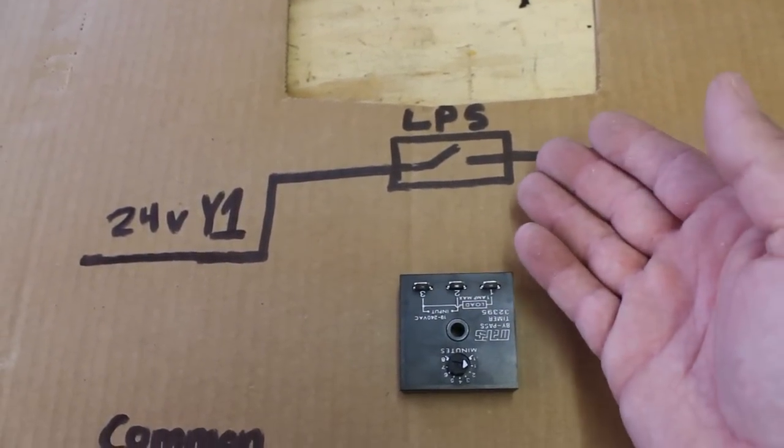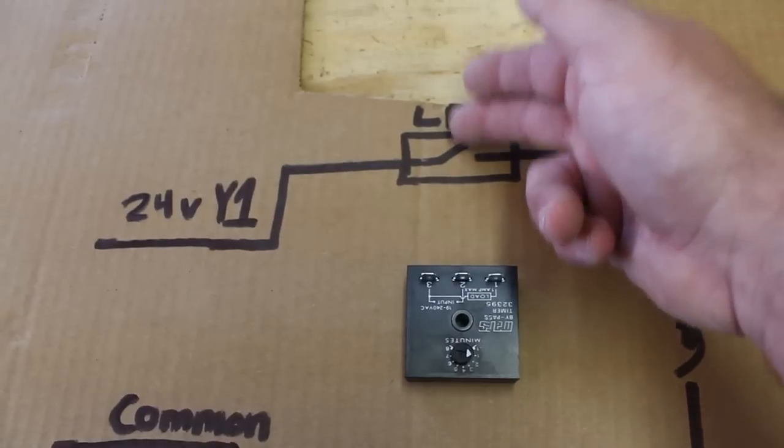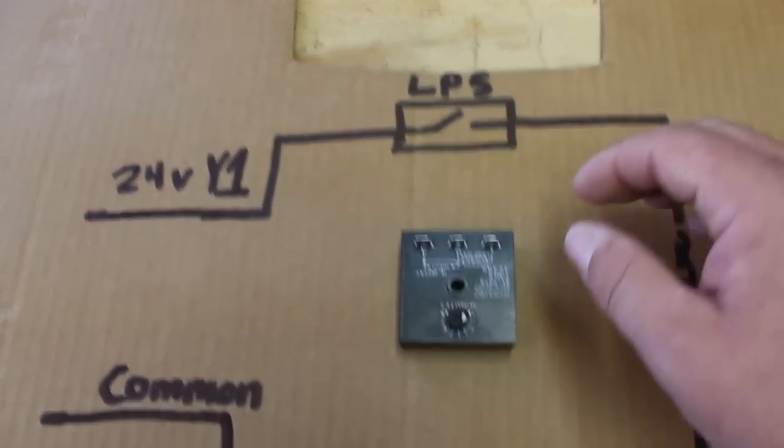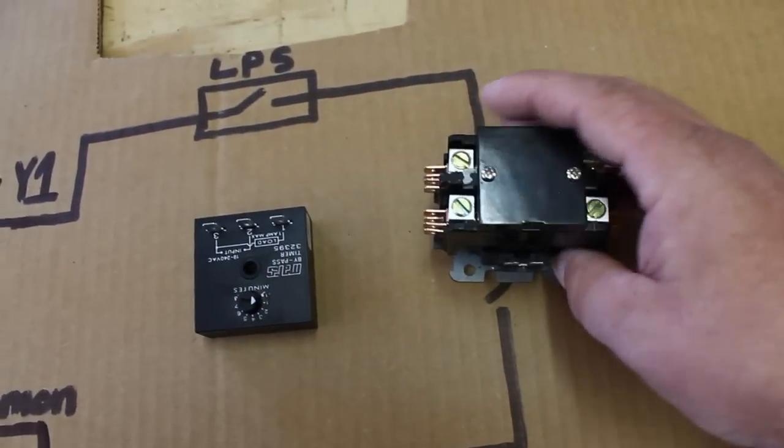There may be more switches, maybe a high pressure switch as well. But for this case we're trying to bypass a low pressure switch. So we'll put the relay right here.